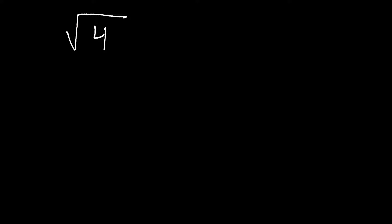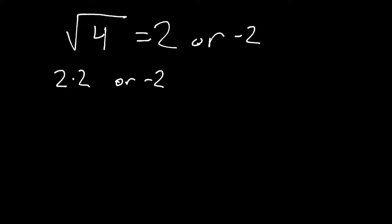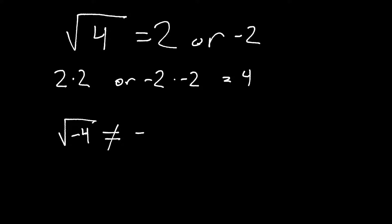What you see here before you is the square root of 4. The square root of 4 is 2 or negative 2. Basically what that means is if you have 2 times 2 or negative 2 times negative 2, you're going to get the answer of 4. Square roots work wonderfully for positive numbers. But the problem comes in where if we want to find the square root of negative 4 — it does not equal negative 2, because negative 2 times negative 2 is positive 4, not negative 4.